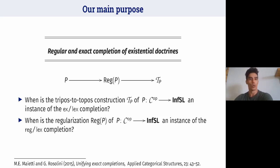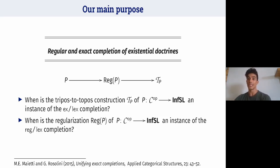Our main goal is to employ the tool of the existential completion to answer two questions. First, when is the triples-to-topos construction an instance of the exact completion of a lex category? And when is the regularization of a given doctrine P an instance of the regular completion of a lex category?